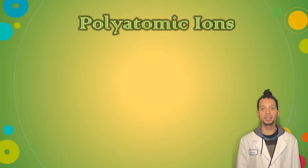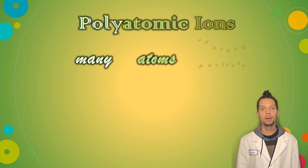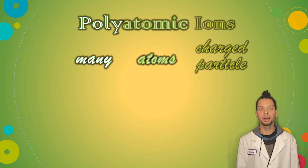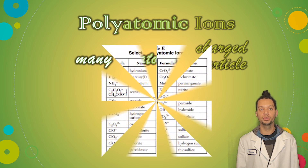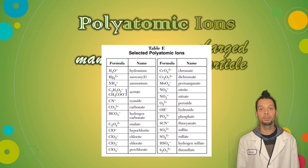There are also polyatomic ions, which as the name implies are charged molecules consisting of multiple atoms being covalently bonded together. We represent polyatomic ions by using the chemical symbols of the atoms in the ion, subscripts to show how many of each atom, and superscripts to show the charge of the ion, just like we see here in this table of common polyatomic ions.